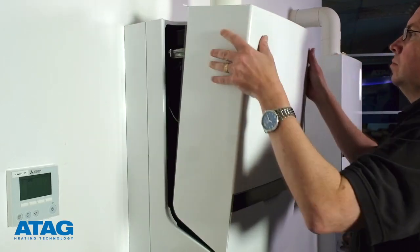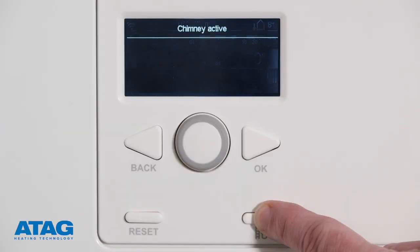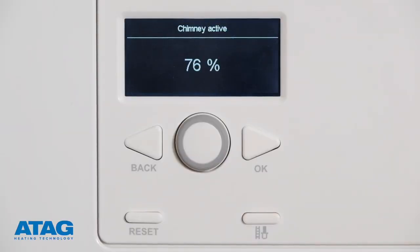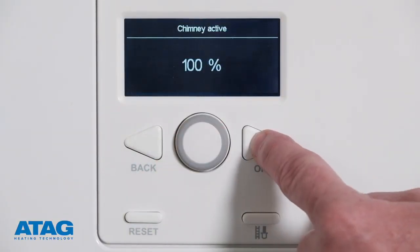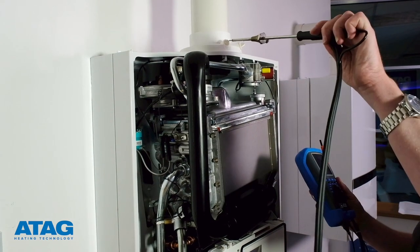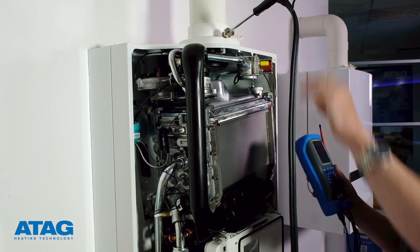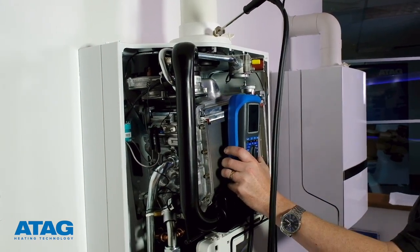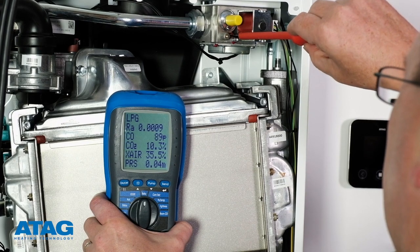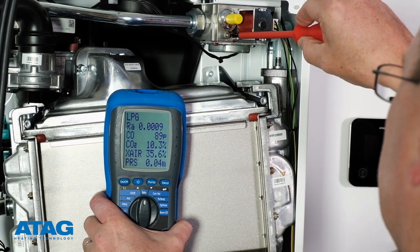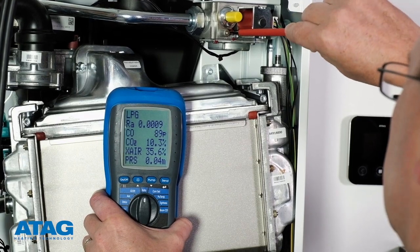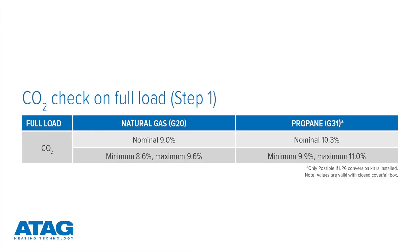To adjust the gas valve, open the boiler case and set the boiler on full load as discussed earlier. Set the CO2 values using a two-millimeter Allen key or a large flat-headed screwdriver on the throttle screw. Turn clockwise for less CO2 or anti-clockwise for more.